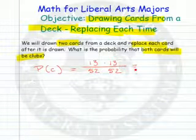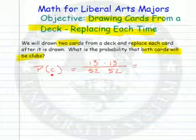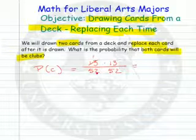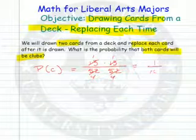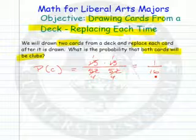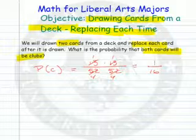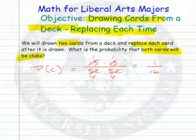So there is my probability that both cards are clubs if I replace the card each time. What is this equal to? Well, 13/52 is one-fourth, and 13/52 is one-fourth. So the probability is one-sixteenth that both cards will be clubs. Hope this helps you out with your concept of probability replacing a card each time. As always, have a very happy day.